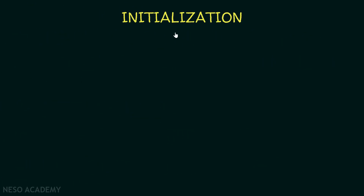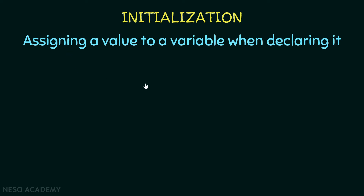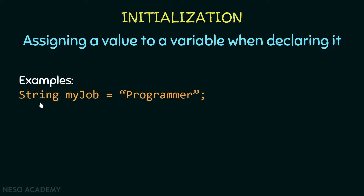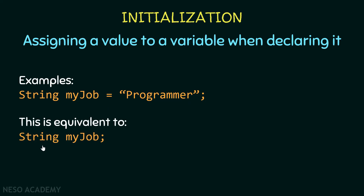Now let's talk about initialization. It is basically assigning a value to a variable when declaring it. For example, I'm declaring a variable called myJob of type String and immediately assigning it to be equal to that string — ended with a semicolon. This is called initialization: assigning a value to a variable at the same time we are declaring it. This is equivalent to first declaring the variable myJob of type String, and then assigning to it the value "programmer".